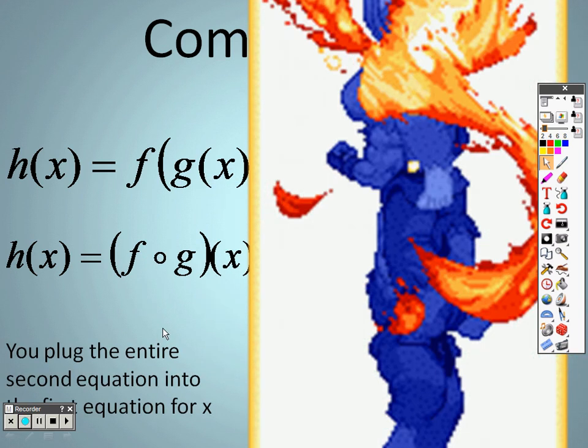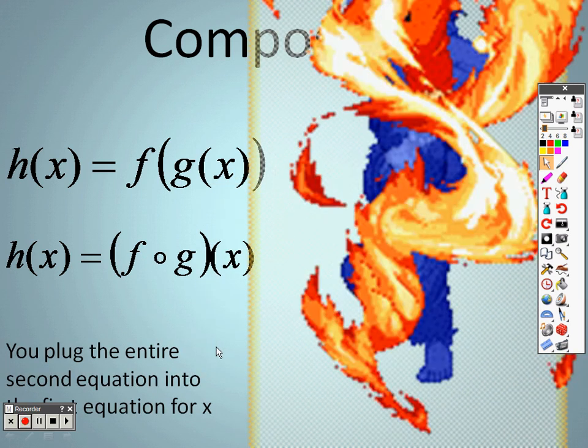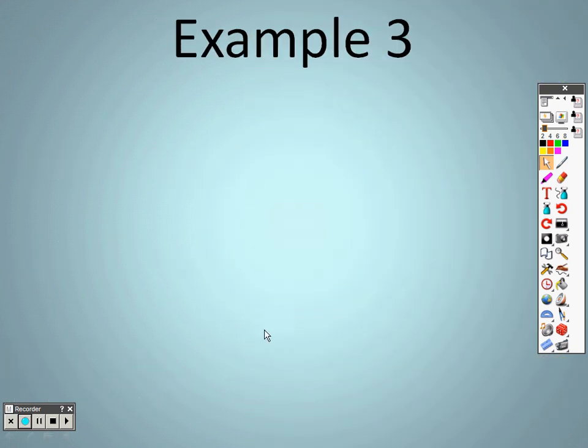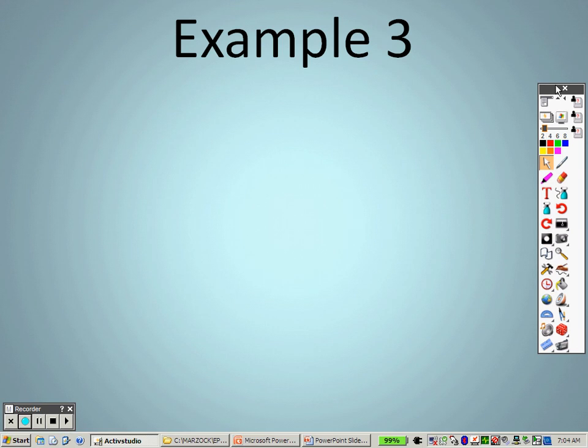That's not actually saying fog of x. It's actually saying that we want you to take f of g of x, which means the composition. This means you plug in the entire second equation into the first equation where there's an x. That's all that that really means. That's what we're really talking about there.